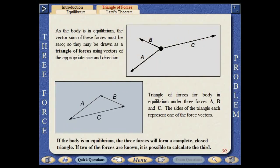As the body is in equilibrium, the vector sum of these forces must be zero, so they can be drawn as a triangle of forces using vectors of the appropriate size and direction. Each side of the triangle represents one of the force vectors.